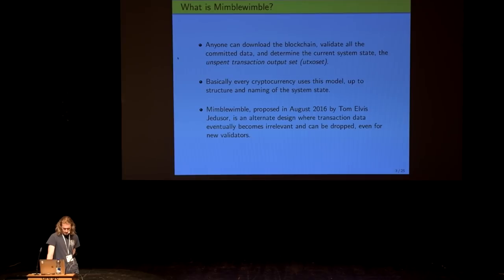So Mimblewimble, which was proposed a year and a half ago by this character Tom Elvis Jedusor, is a slightly different design where people can verify the state of the system without downloading all of the background data. Somehow it's possible to compress out old transactions, so a lot of the data is redundant, and you don't need it to get full public verifiability. And one quick note before I move on, I said this character Tom Elvis Jedusor. We're in Switzerland, maybe there are a lot of French people or French speakers who might recognize this name. It is the name of Voldemort in the Harry Potter books in the French translation. This is not a real name as far as I'm aware. This Mimblewimble system was originally proposed in the form of a text document published on a Tor hidden service and dead dropped on an IRC channel a year and a half ago. The author just dropped it, signed off a minute later, and has never come back as far as any of us are aware.